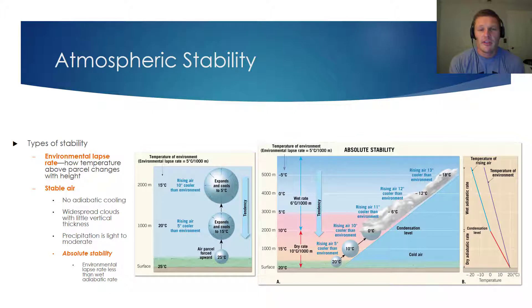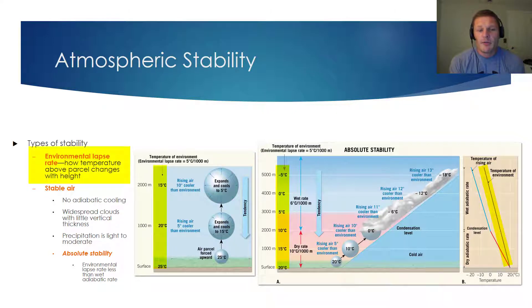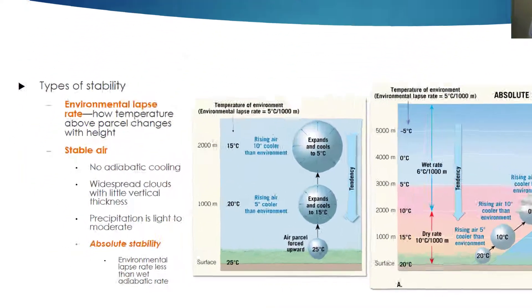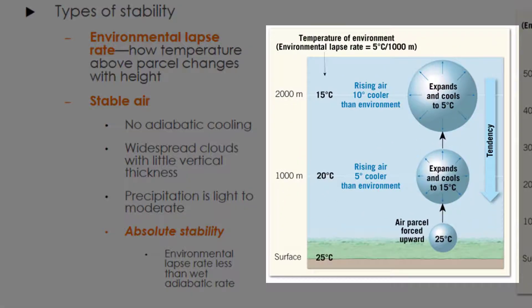I'd like to now transition this discussion to atmospheric stability. Before talking about atmospheric stability and instability, we need to know what the environmental lapse rate is. The environmental lapse rate is how temperature above a parcel of air changes with height. The environmental lapse rate can change on a regular basis for a given location. Looking at the image to the left, the environmental lapse rate drops 5 degrees Celsius for every 1,000 meters of altitude.